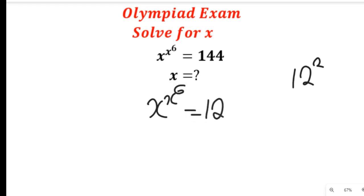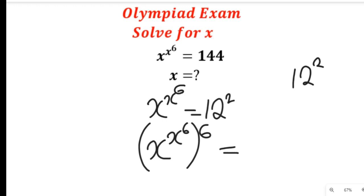To simplify further and get an accurate solution, what we are now going to do is multiply both sides by the exponent of 6. So we multiply both sides by the exponent of 6, giving us 12 to the power of 2 multiplied by the exponent of 6.